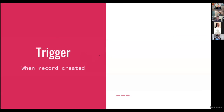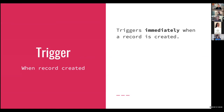First is 'when a record is created' — it triggers immediately when a record is created. Some people think they can create a new record, type some things into a field, and have that picked up by the automation, but it won't do that. It literally fires the trigger once that record appears in Airtable. So whatever data you want to process in that record has to already be in the record. If it's not there, then the automation is not going to pick it up.